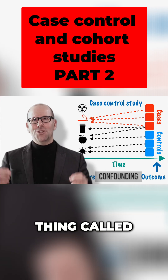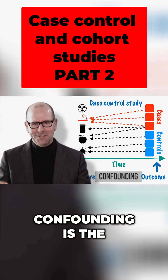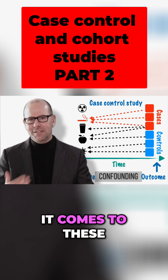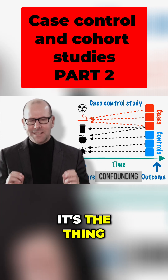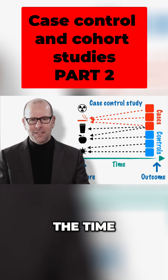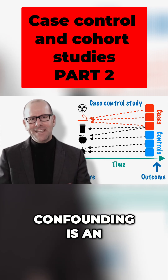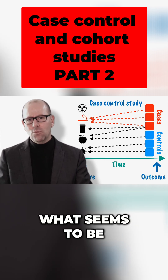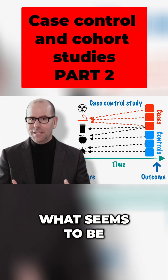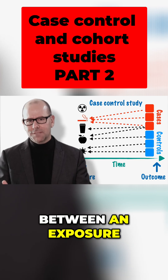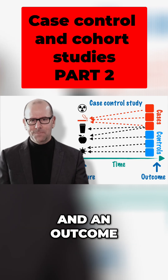That is because of this thing called confounding. Confounding is the biggest weakness when it comes to these sorts of studies — it's the thing we have to think about all of the time. Confounding is an alternative explanation for what seems to be a causative relationship between an exposure and an outcome.